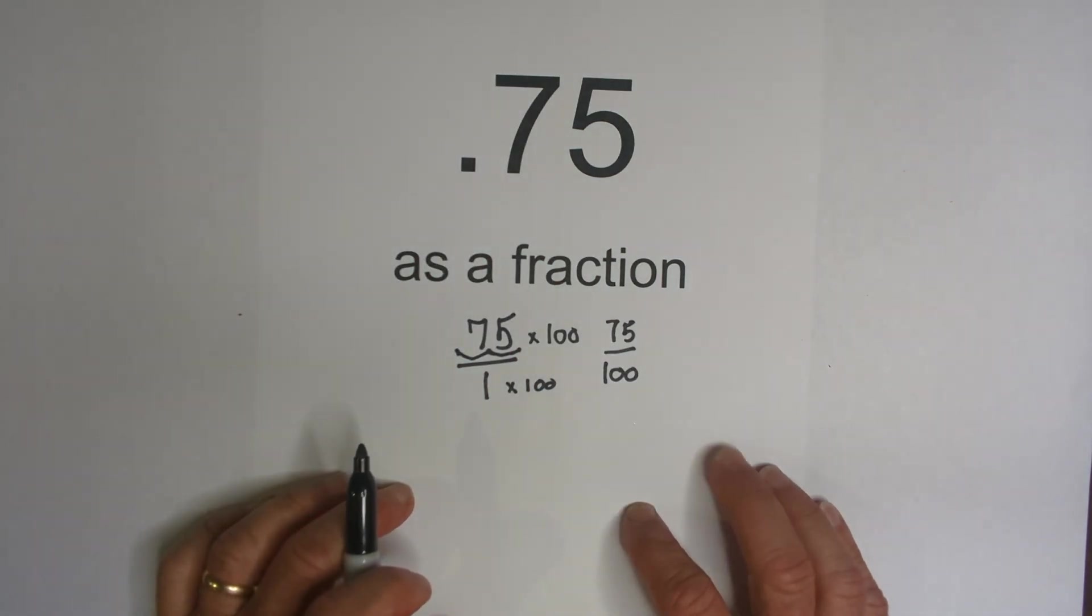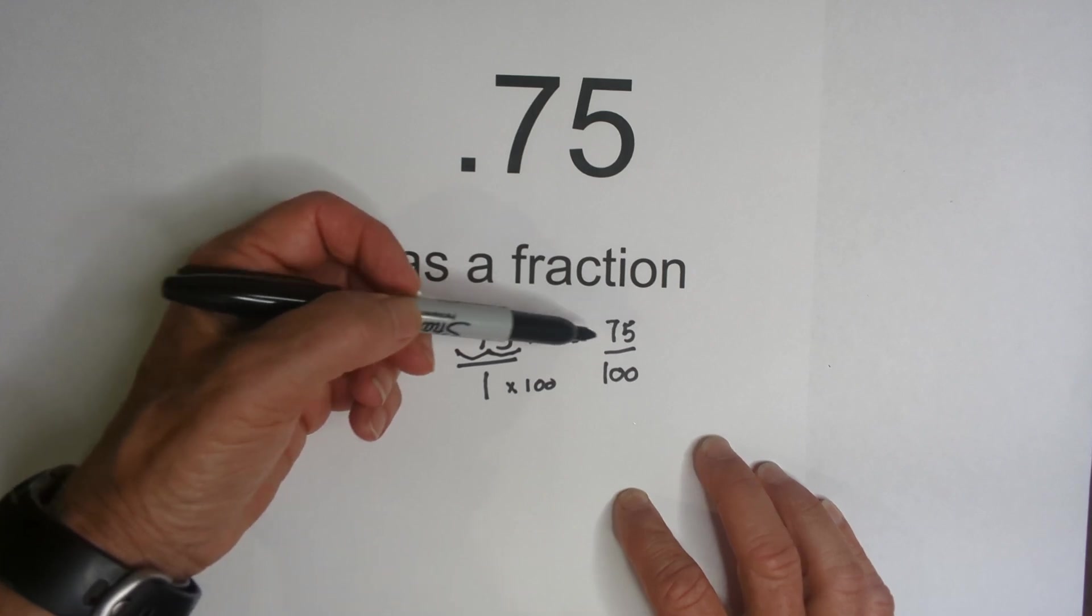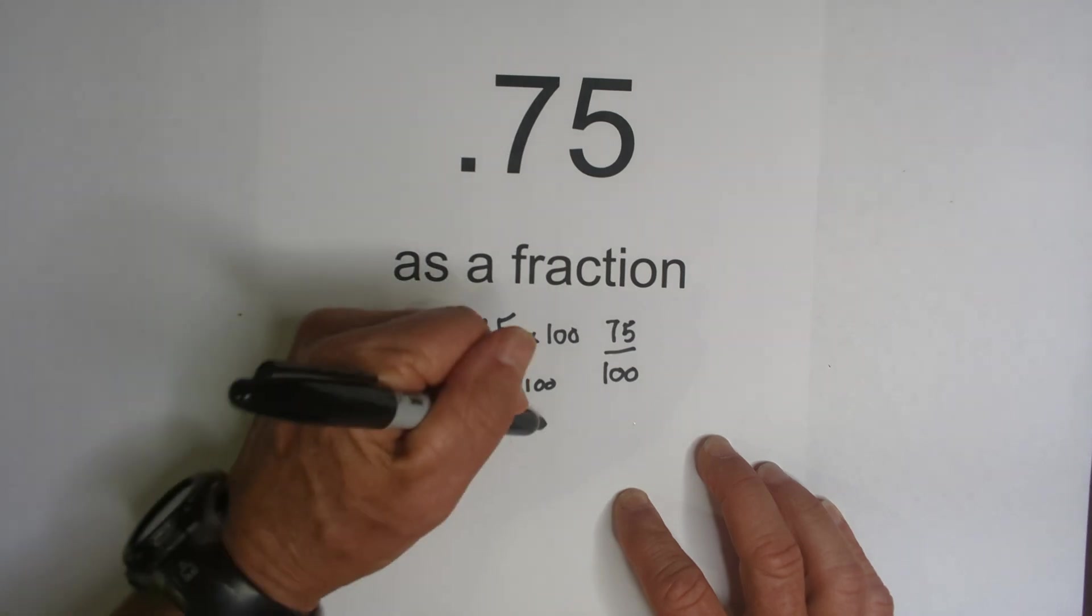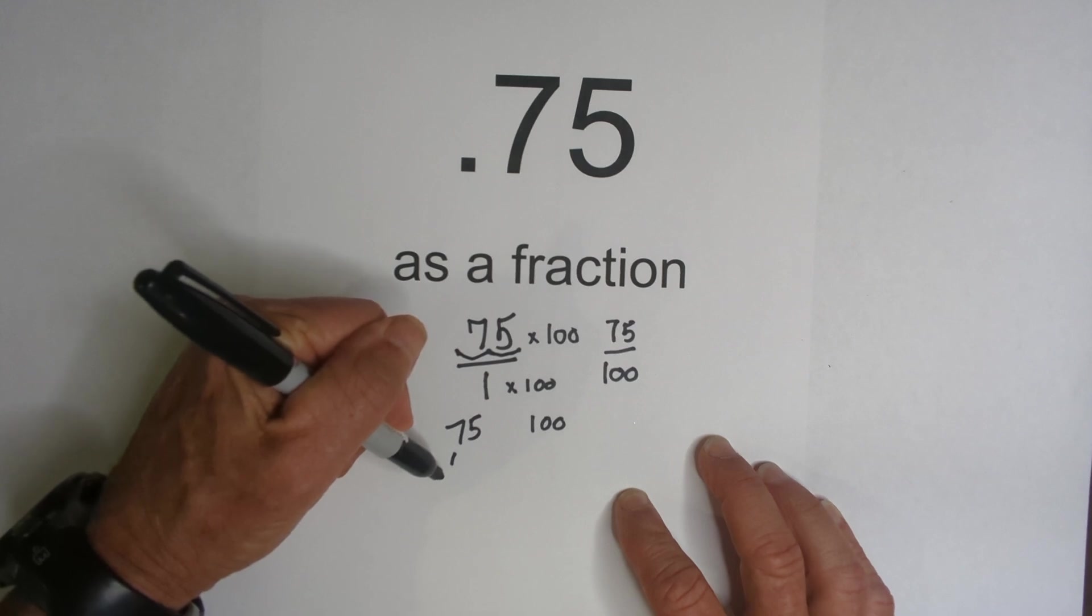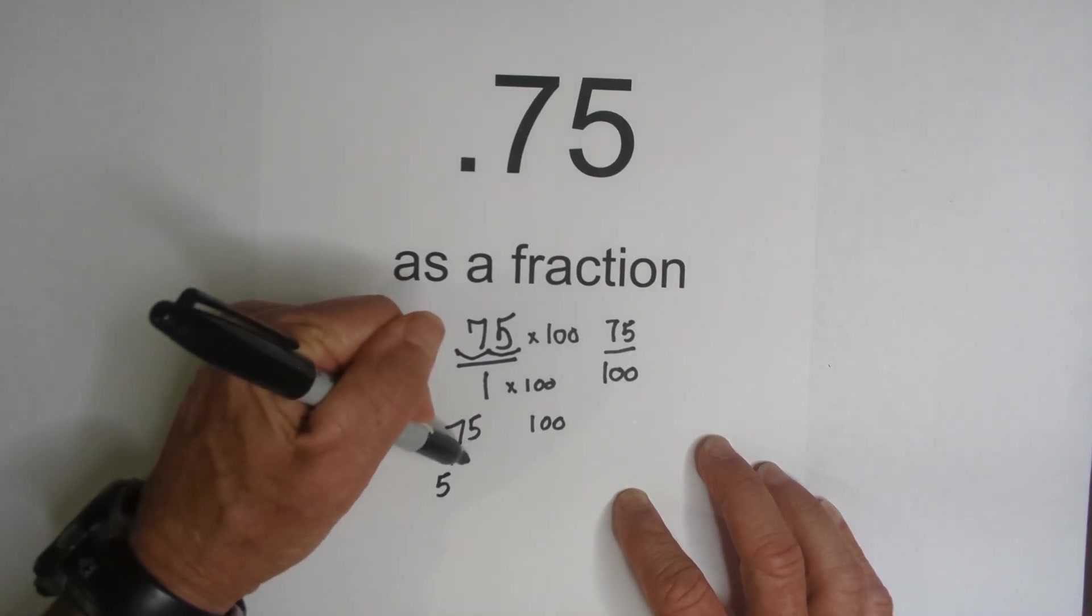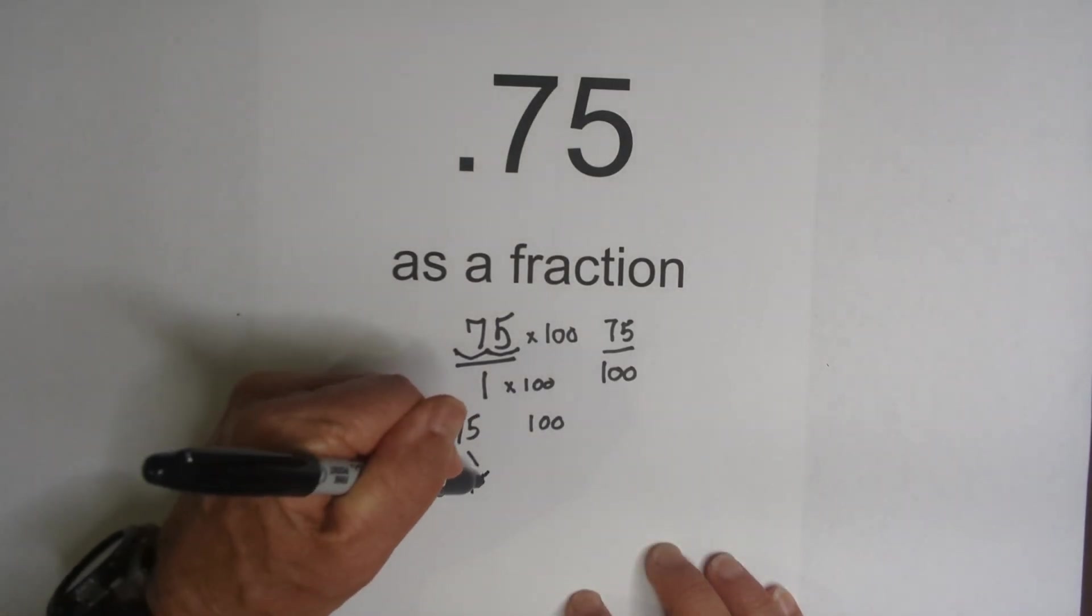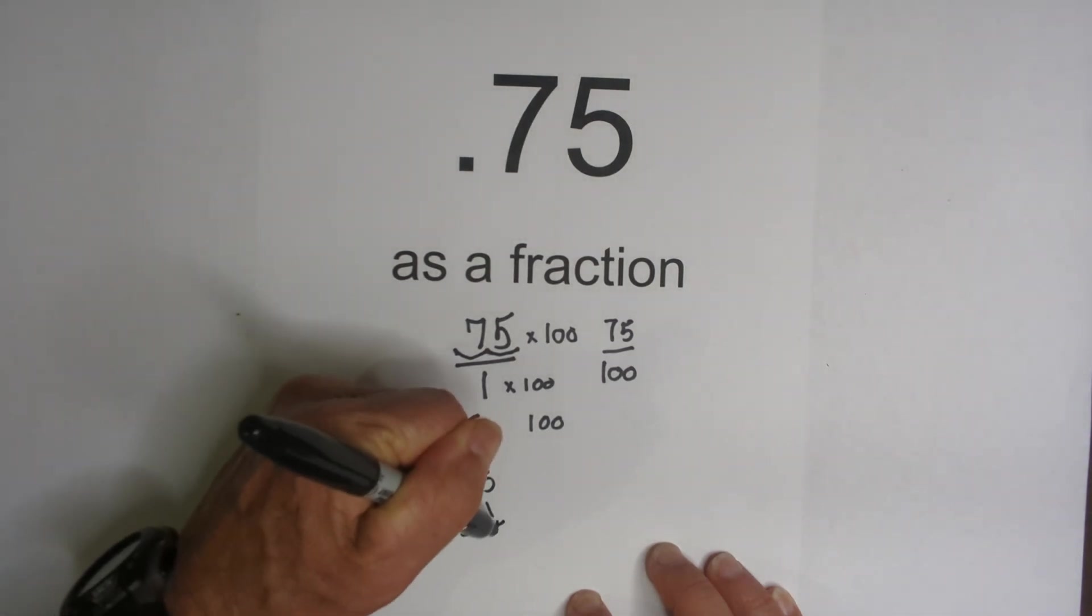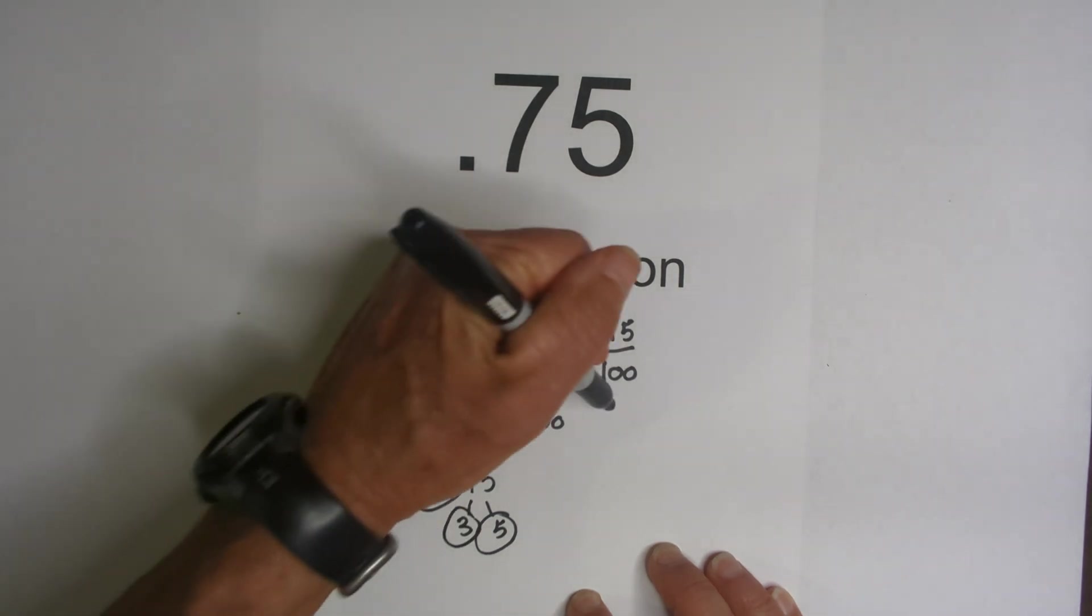Now we can simplify. You may know that the greatest common factor is 25, but I'm going to show you how you can find the greatest common factor by using two factor trees. So let's go ahead and divide it by, 5 goes into 75, 15 times, circle the 5 because it's prime, and then 3 times 5 is 15. We're down to prime numbers.